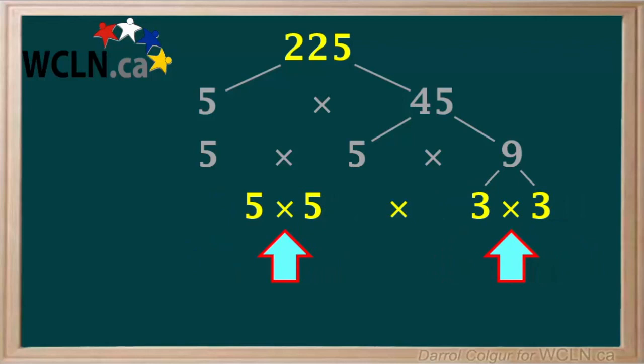What we do with these pairs of identical prime factors is circle them, like this. We take the square root by bringing down 1 of each pair.